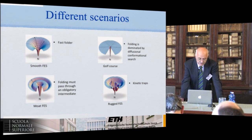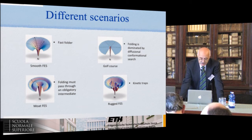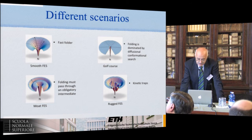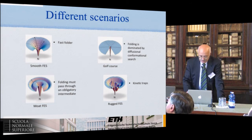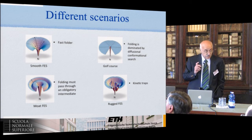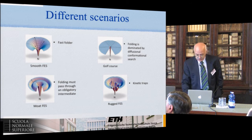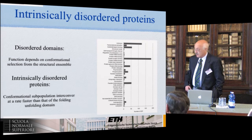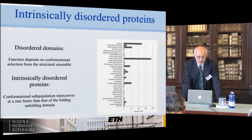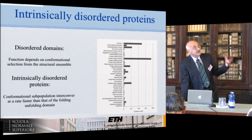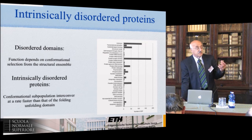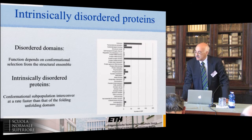Many proteins behave like that. And associated there is a landscape, which can be a typical funnel-like landscape, which corresponds to the situation of a fast folder, and then many other variants of that. Especially driven in the past by the great success of crystallography, we tend to associate to proteins in the folded state a very well-defined structure. But that's not always the case.